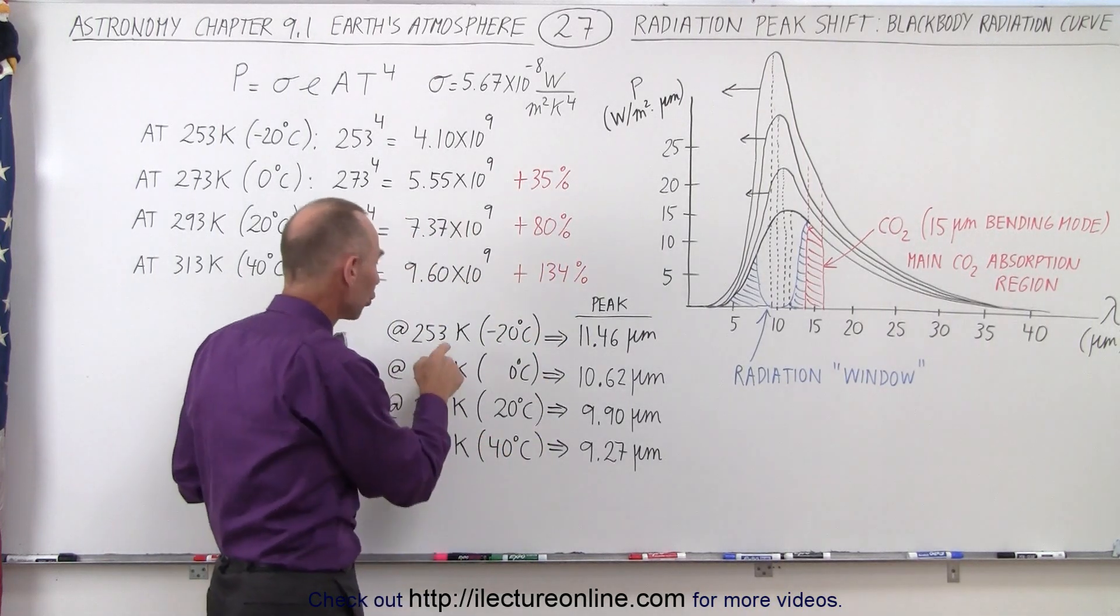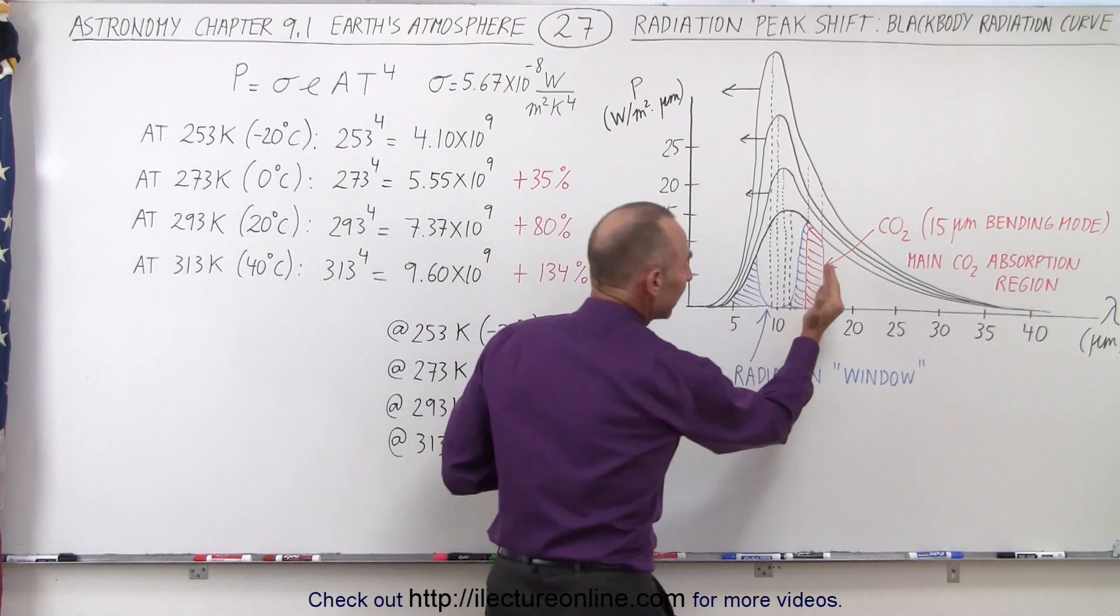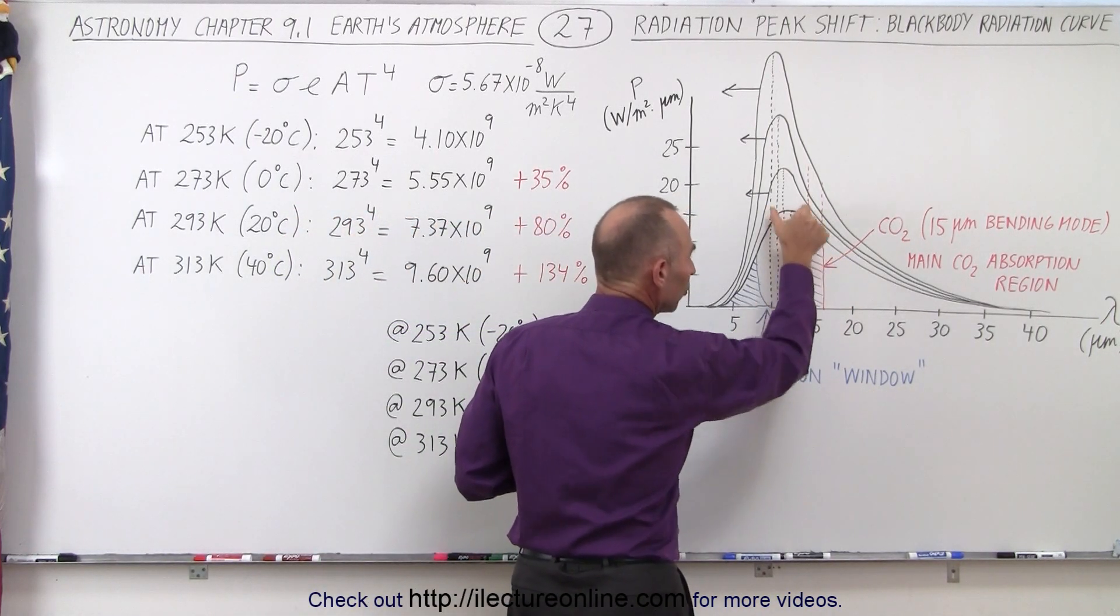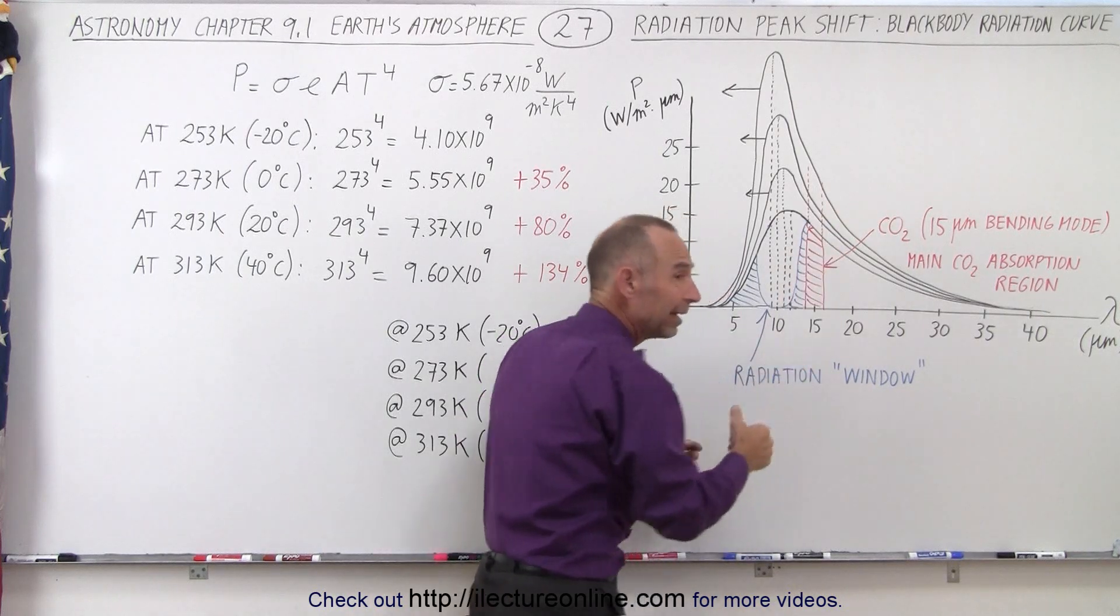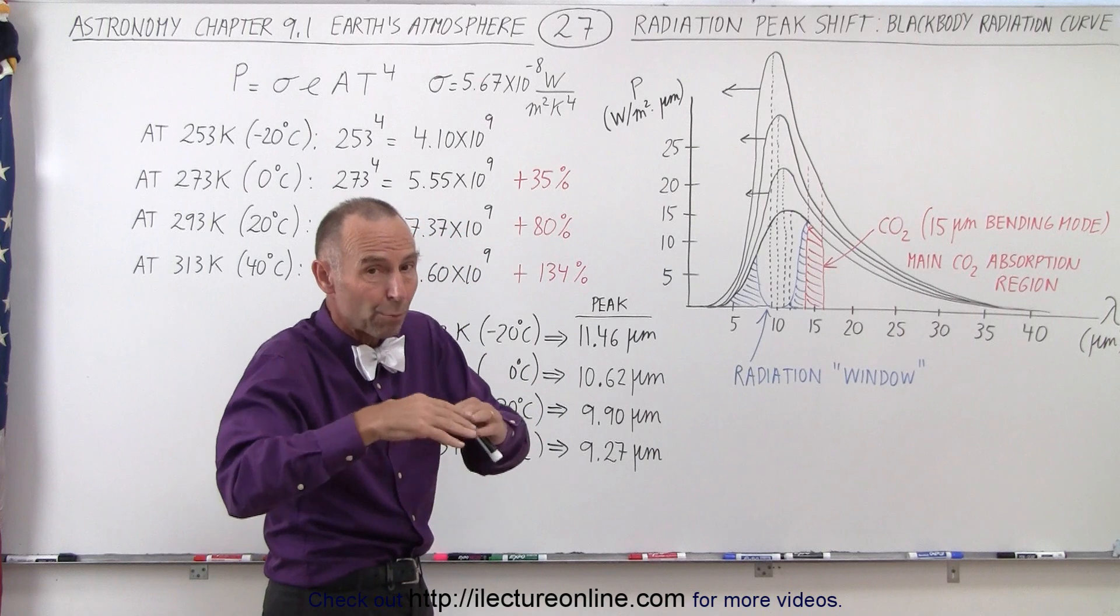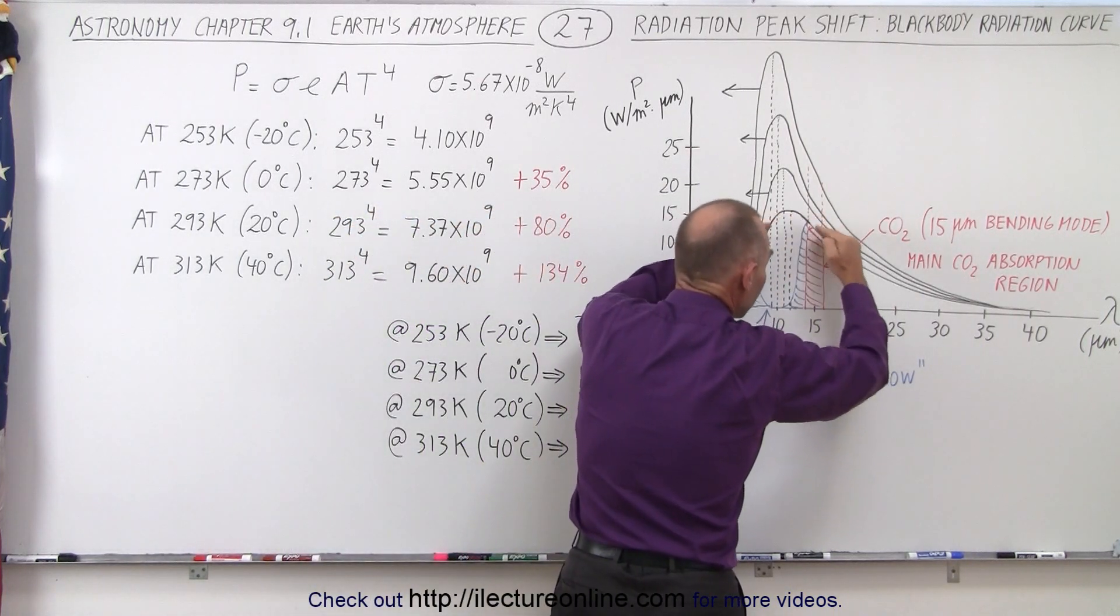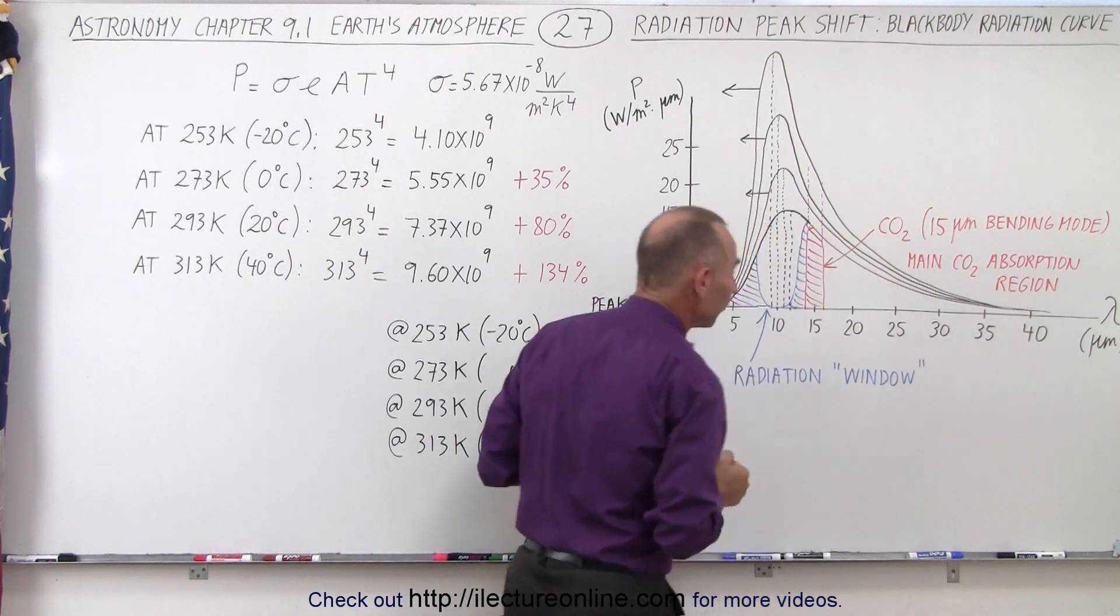Now for colder temperatures, like at minus 20 degrees centigrade, you can see that it's a little bit closer to the peak, so it has a greater effect. In polar regions or during the winter time, carbon dioxide seems to be more effective and therefore absorb a greater percentage of the radiation curve.